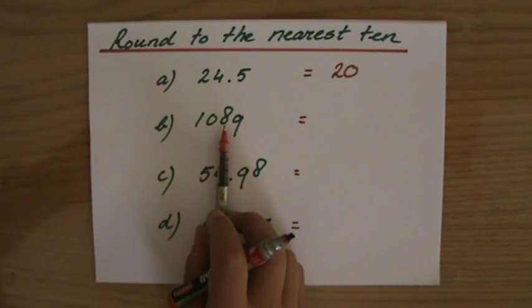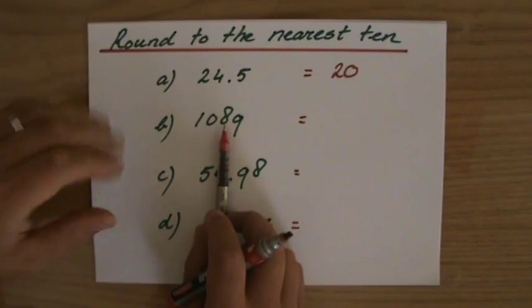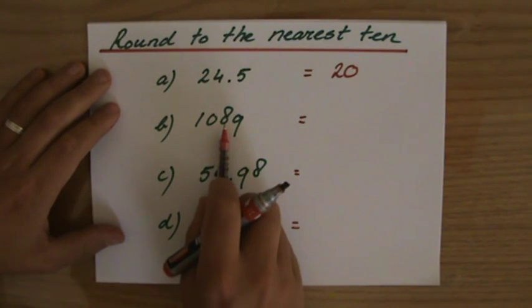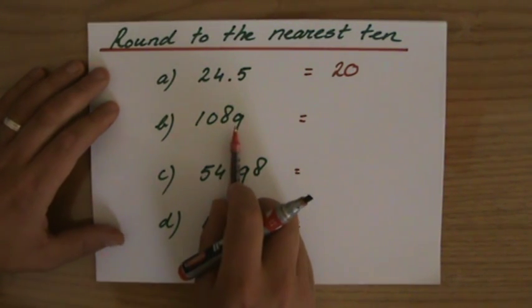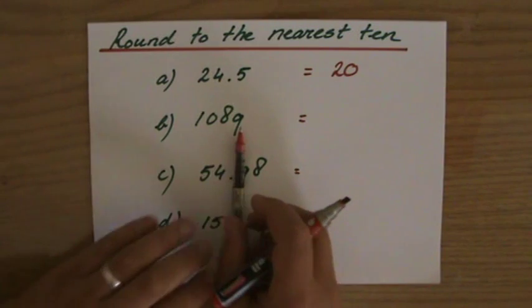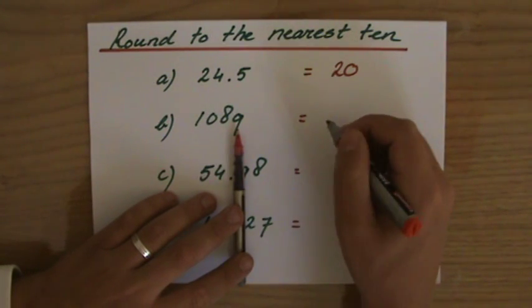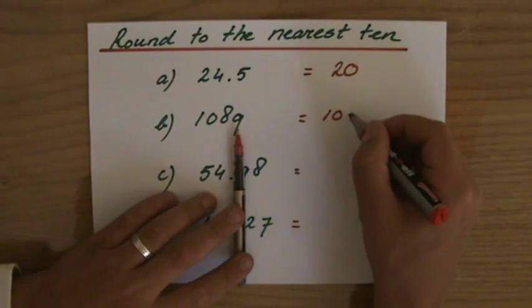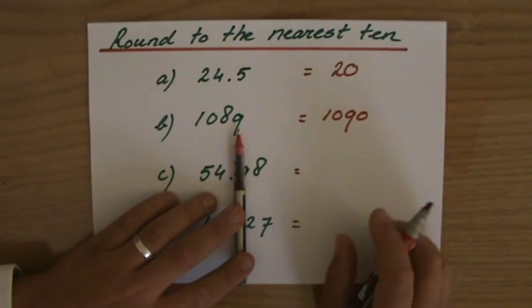And that 8 also can either stay an 8 or goes up to a 9. That depends only on the next number. If you go down, it's a 5 or higher. So the 8 indeed goes up. So it will be 1090 to the nearest ten.